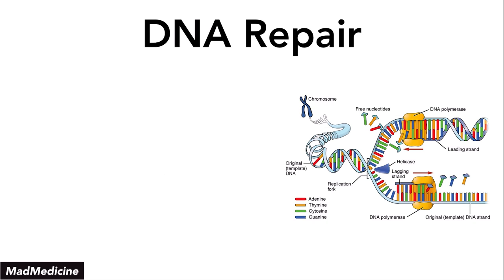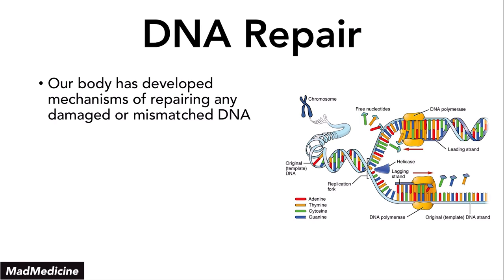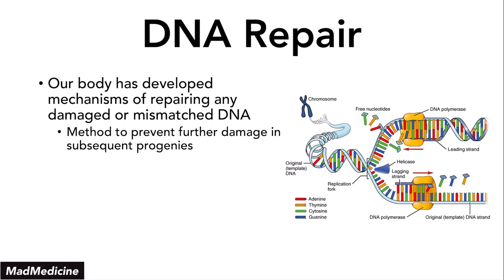So now let's talk about DNA repair. If our body was not able to repair those mutations during replication or otherwise, we would all be dead. Our body has developed a mechanism of repairing any damaged or mismatched DNA. Think about it from an evolutionary standpoint: our bodies want to pass off our DNA to our progeny, and we don't want errors happening. So we have developed a way to fix errors that can happen in the DNA.